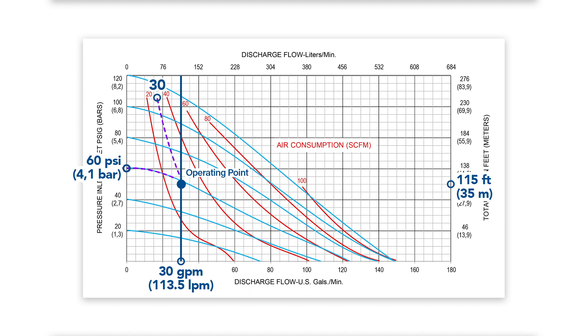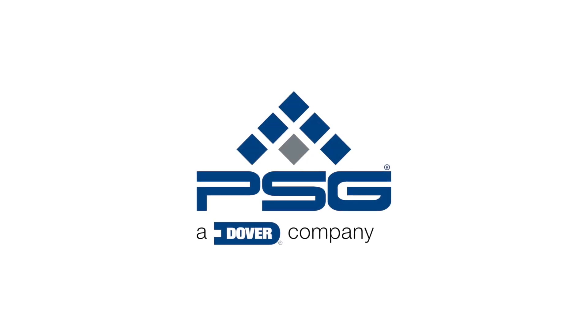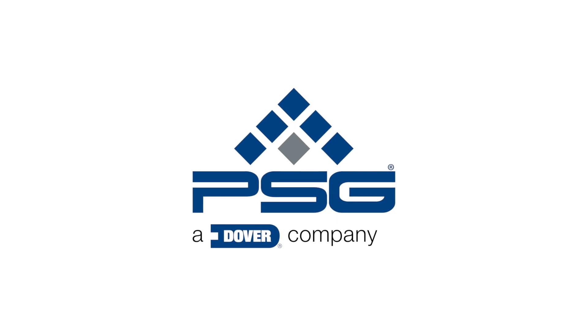Generally, whether pumping a liquid similar to water or something much more viscous, it is recommended to always operate an AODD pump in the middle part of its performance curve, rather than at the extreme conditions. This is the most efficient way to operate an AODD pump, not only from a performance and air consumption perspective, but it also helps extend the life of wear parts.